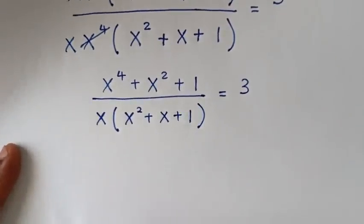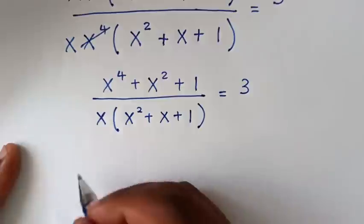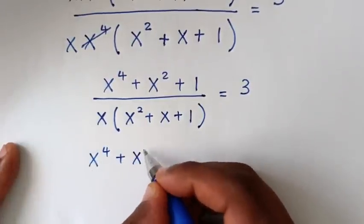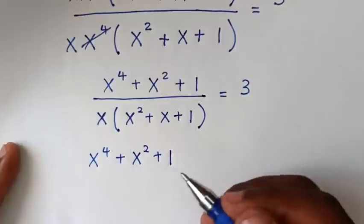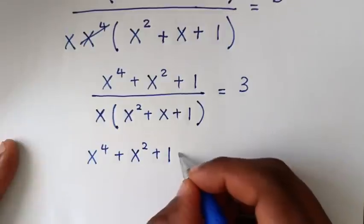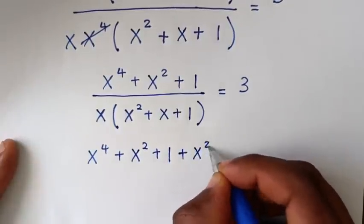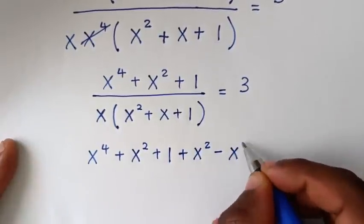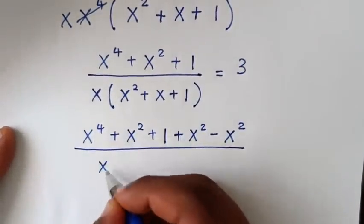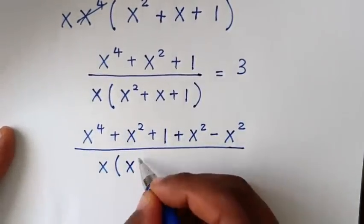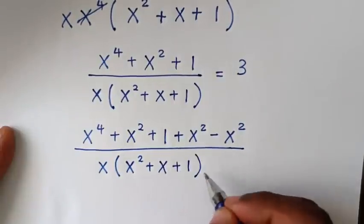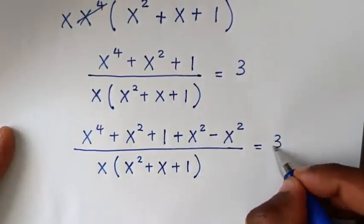In the next step, in the numerator x⁴ + x² + 1, we want to make this a perfect square, so we add x² and subtract x². The denominator remains x(x² + x + 1), equal to 3.